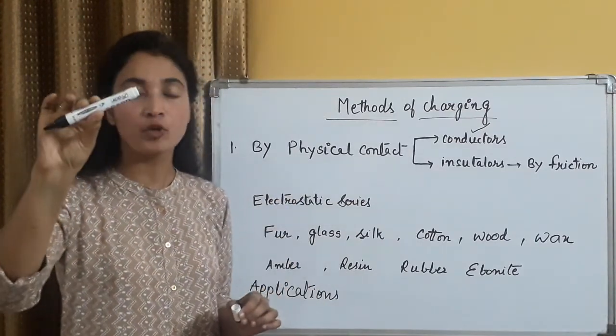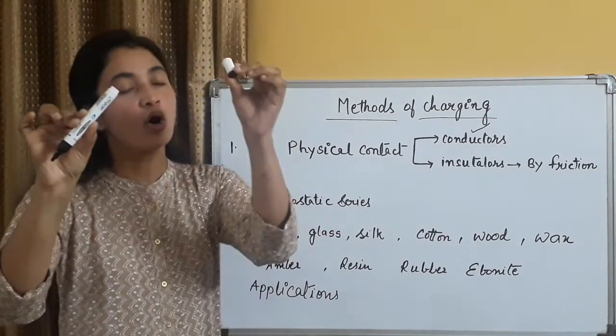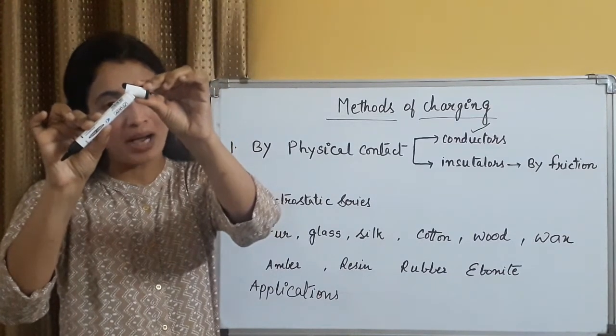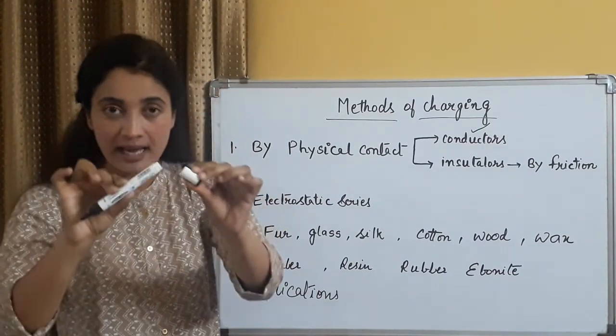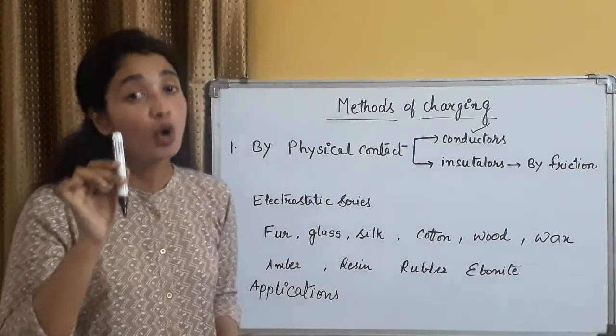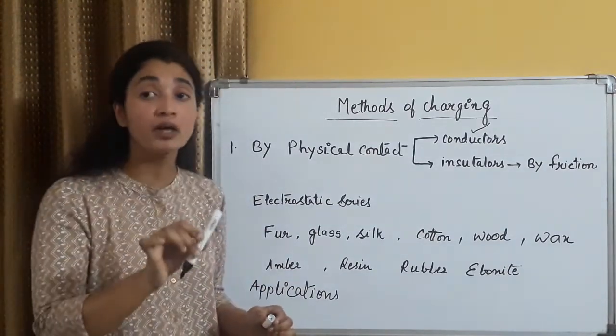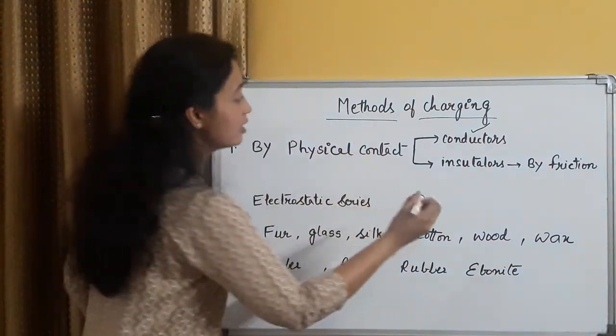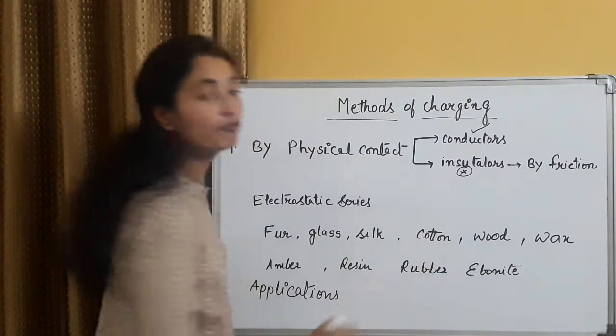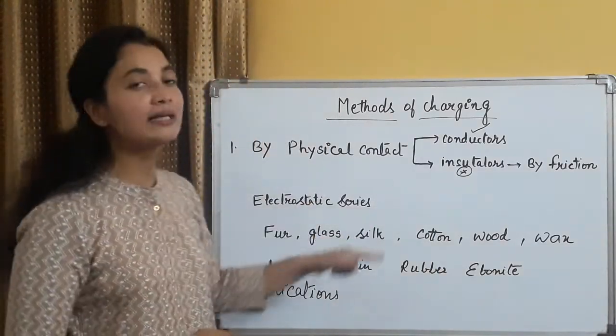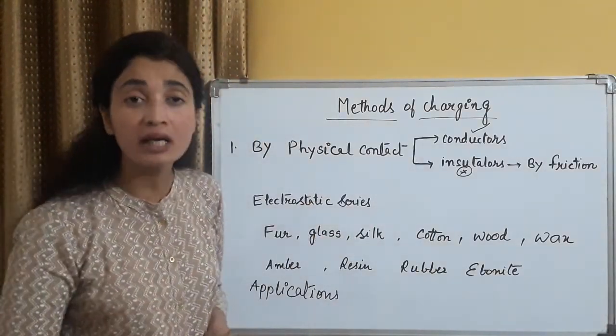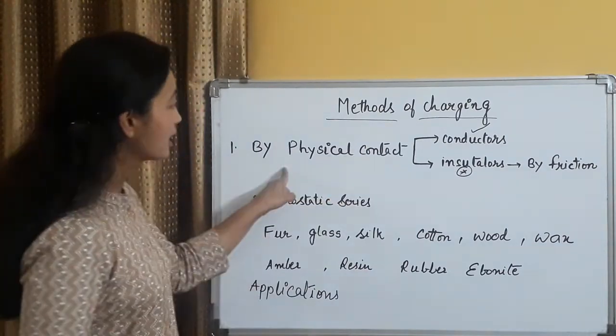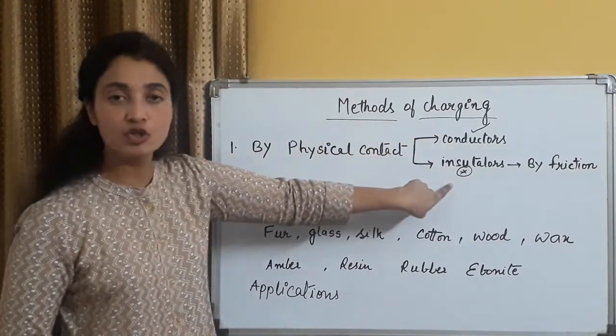Because, hum conductors ki baat kar rahe hai, jin ke paas many number of free electrons are available. Bohut saare free electrons, conductors ke paas, available hai. Isliye, as I told, ye suppose humara, ye wala part, fully charged hai, aur ye cap uncharged hai. So, jab uncharged ko, hum fully charged ke paas laate hai, to at the point of contact, charge ka transfer hota hai. Yad rakhiye, charges are transferred, they are not created, they are not destroyed.